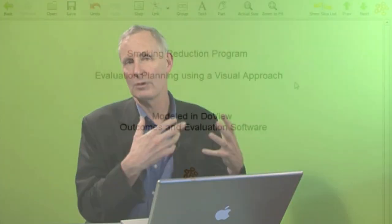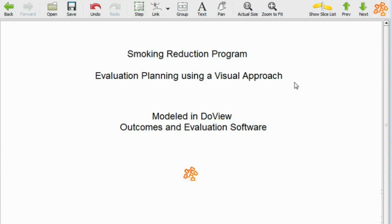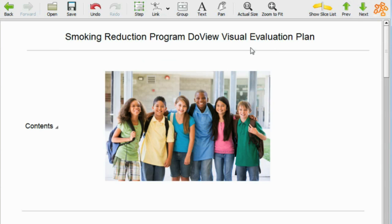If we use this approach, we actually structure our evaluation planning onto a visual model. And so I'm going to show you now how we can do this. And I'm going to use DoView outcomes and evaluation software, which is software designed both for building program logics, but also to let us use those program logics or outcomes models, as they're sometimes called.